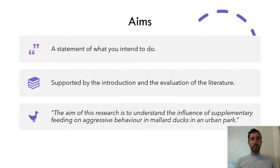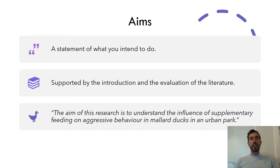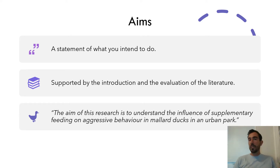First up, we're going to look at aims. We write this first and it comes at the end of our introduction. Once you have reviewed the literature and explained what is out there and where there's a gap in knowledge, you should tell the reader the aim of your study. The aim is a statement of what you intend to do. It's supported by your evaluation of the literature so the reader can see why you have presented those examples and explained what is out there and what's missing from the available literature.